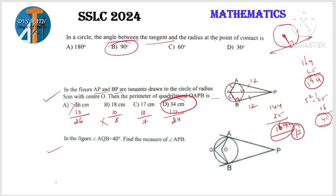Coming to the next one, in the figure angle AQB is 40 degrees. Find the measure of angle APB. The basic concept is from 9th standard. Consider the arc - the angle formed by the radii from an arc is double the angle formed at any point on the circumference. If this is 40 degrees, then this should be 80 degrees.